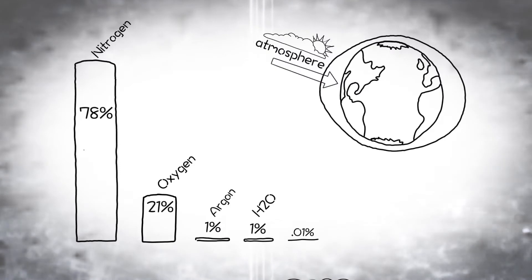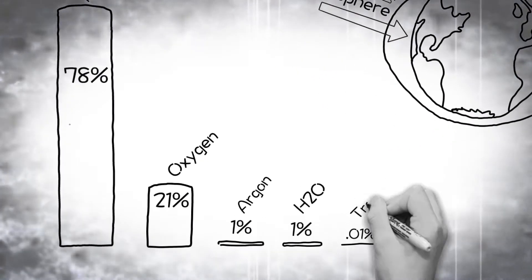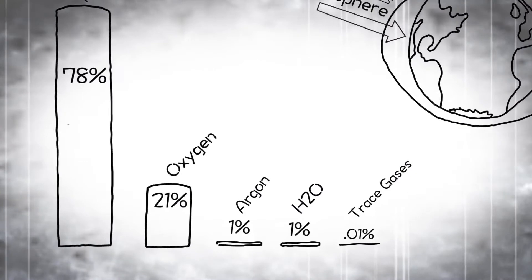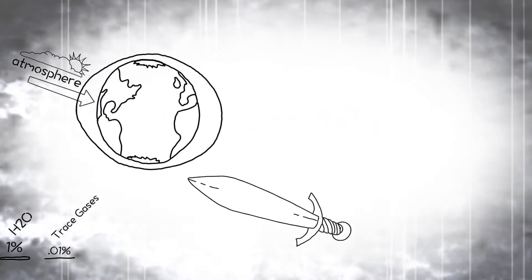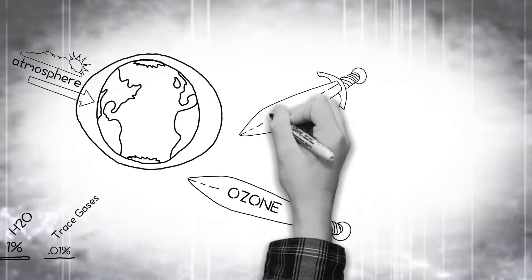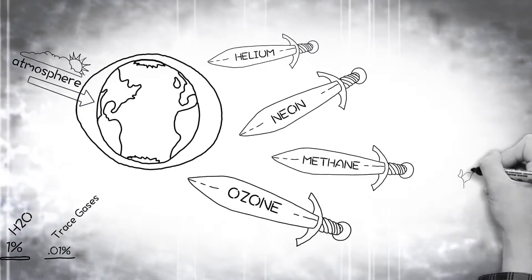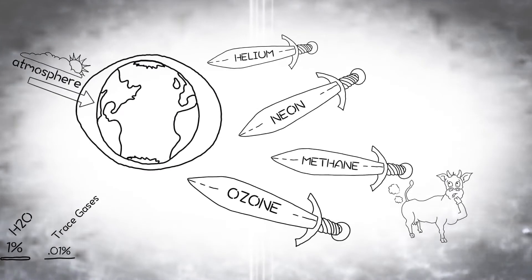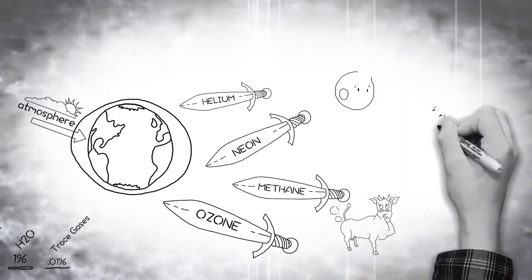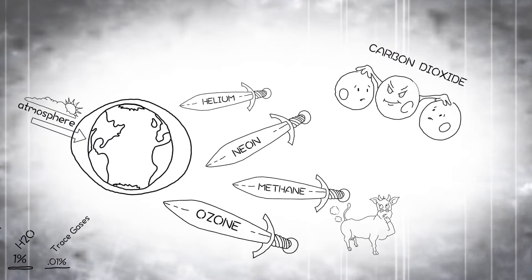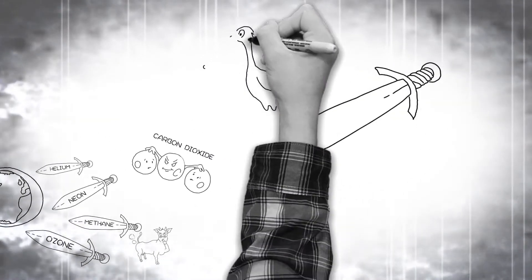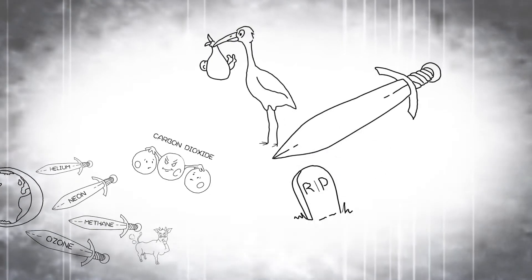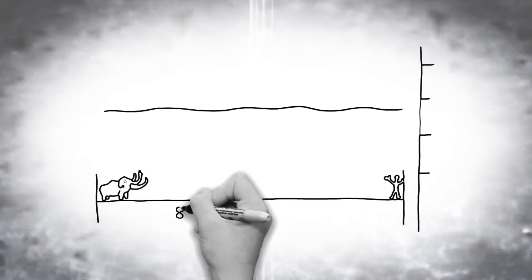And less than one-tenth of one percent of what scientists call trace gases. Now, these trace gases are made up of stuff that are essentially double-edged swords of life: ozone, neon, helium, methane, and tada, our star player, carbon dioxide. They're called double-edged swords because they can both help give life and harm life.